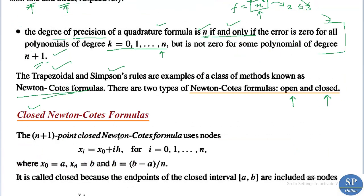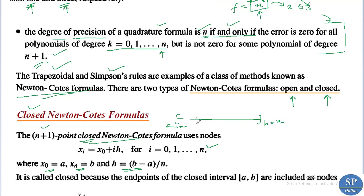The n+1 point closed Newton-Cotes formula uses the nodes x_i = x_0 + ih for i = 0, 1, 2, 3, etc. up to n, where x_0 = a, x_n = b, and h = (b−a)/n. That means we are subdividing the entire interval [a, b] into n subintervals, taking x_0 = a and x_n = b, with x_1, x_2, etc. in between. Each subinterval is of length h = (b−a)/n.